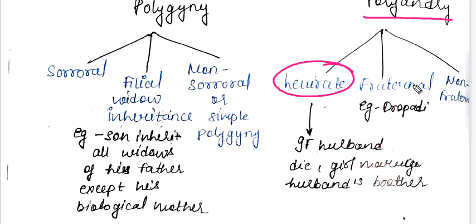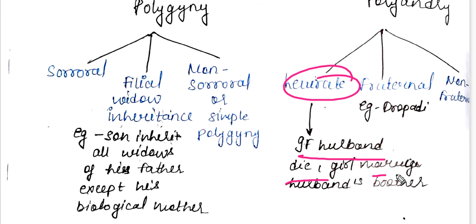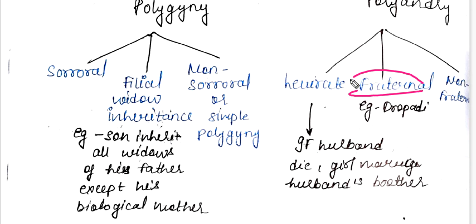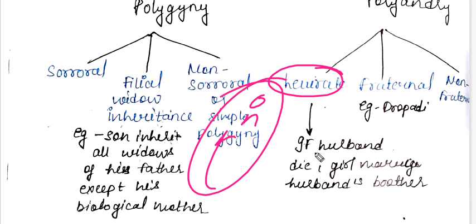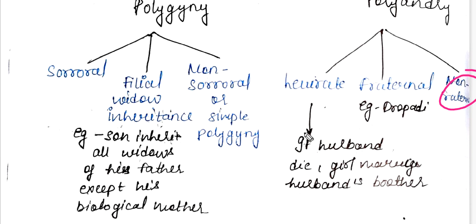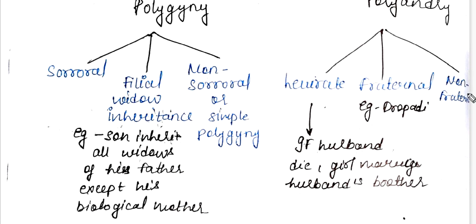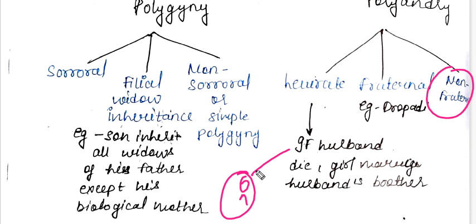Polyandry is levirate and fraternal. Levirate means if the husband dies, the wife marries the husband's brother. Fraternal means one woman is married with the whole set of brothers — like Draupadi, who was married to five brothers. If one woman is married with one husband then marries another brother, that is levirate. Non-fraternal means one woman married with many men who are not brothers — they are non-fraternal. So women having more than one husband, but the husbands need not be brothers — that is non-fraternal.